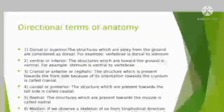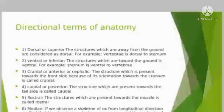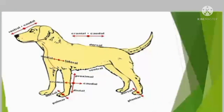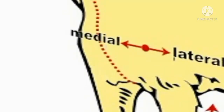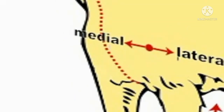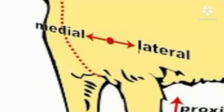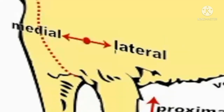Another directional term is medial. If we measure the skeleton of an ox or any animal from the longitudinal direction, we can see an imaginary line — this is the medial line. Structures present inside the ribs are considered to be medial. For lateral, we take the surface of the ribs — the external surface of the ribs is away from the medial axis and is therefore considered lateral.